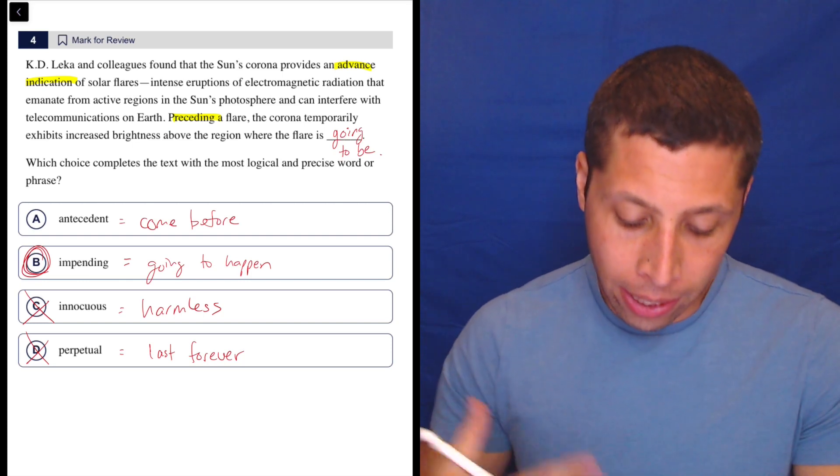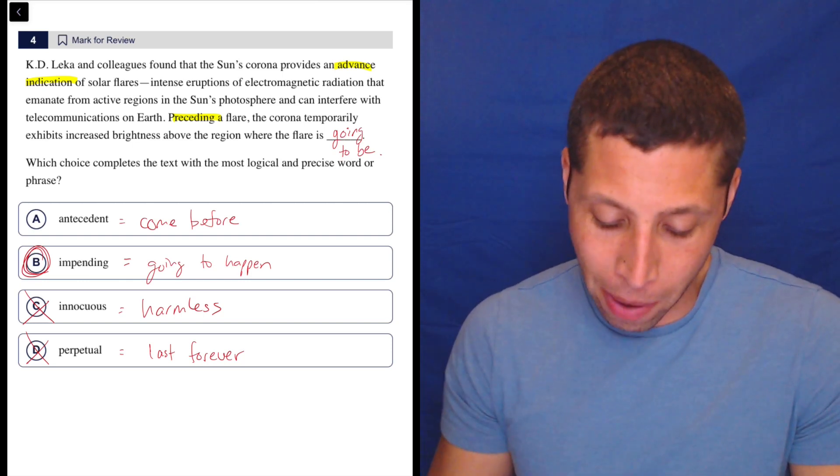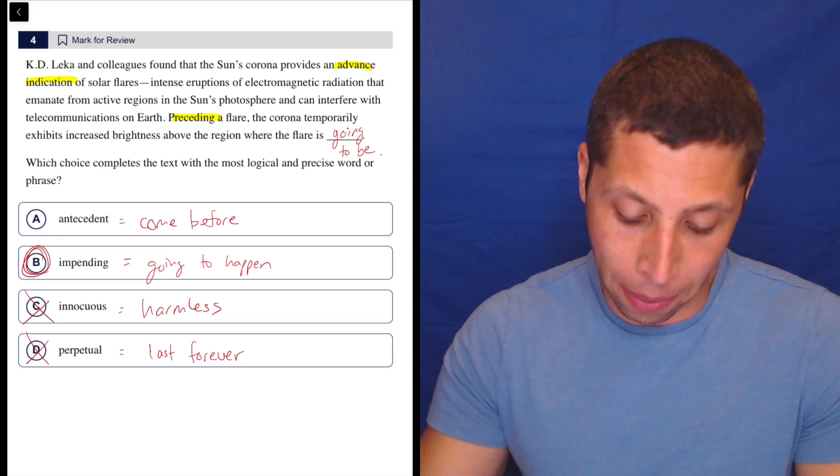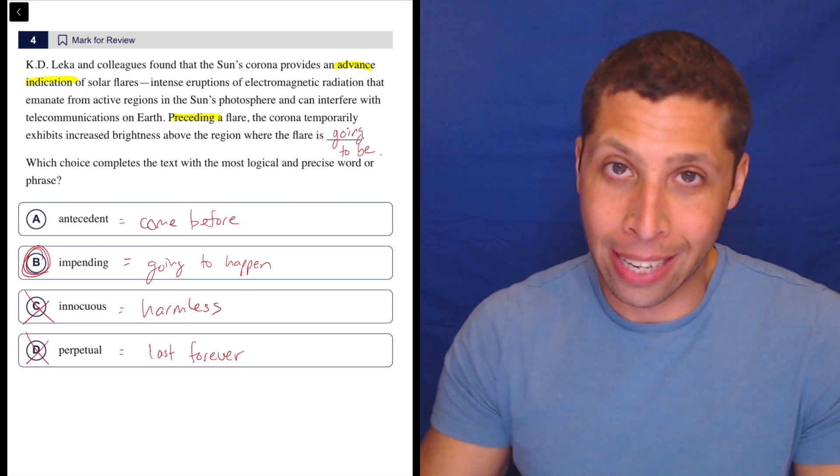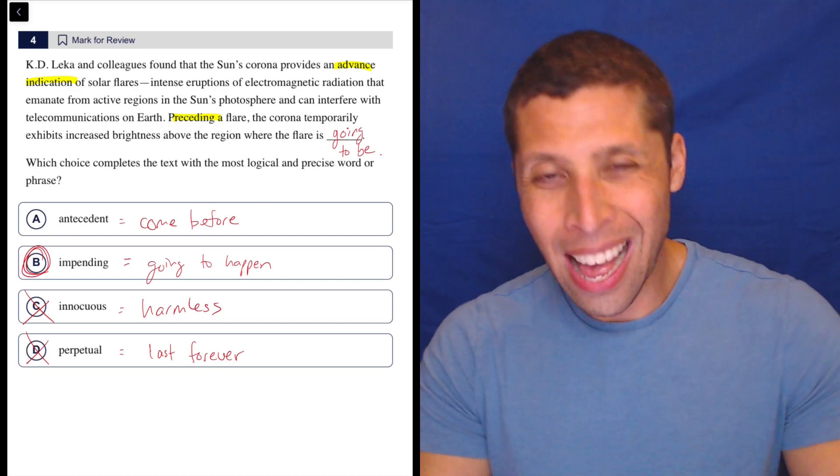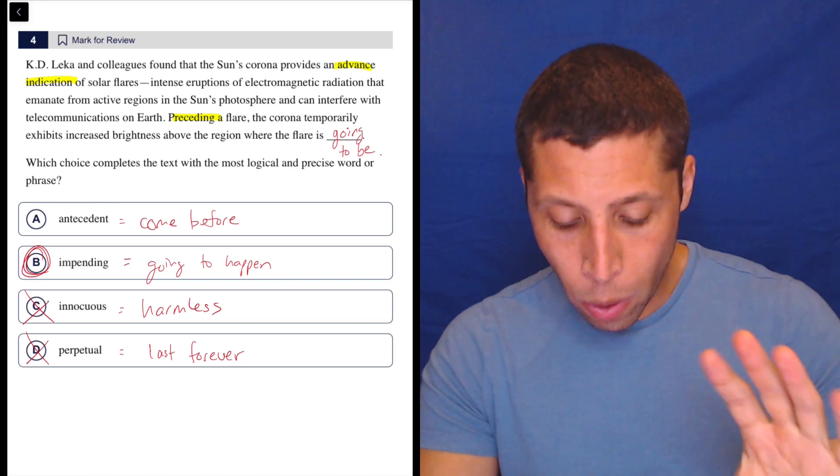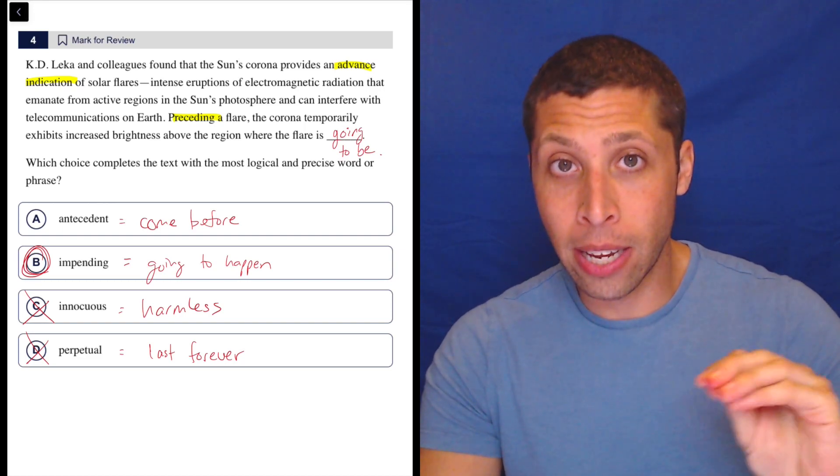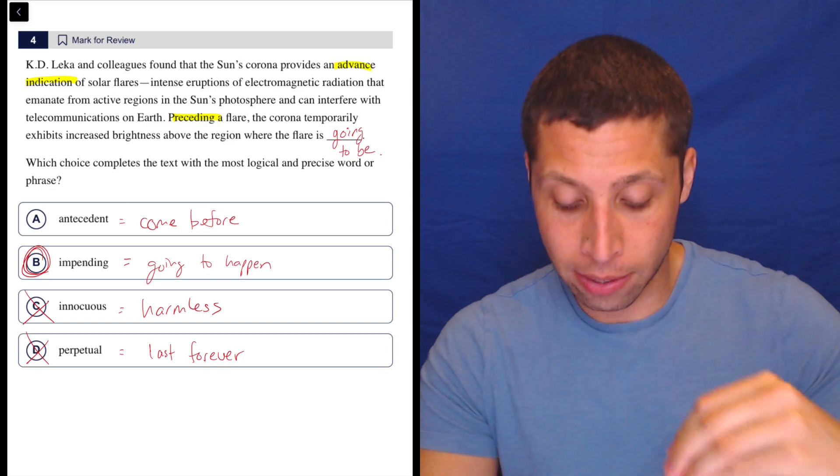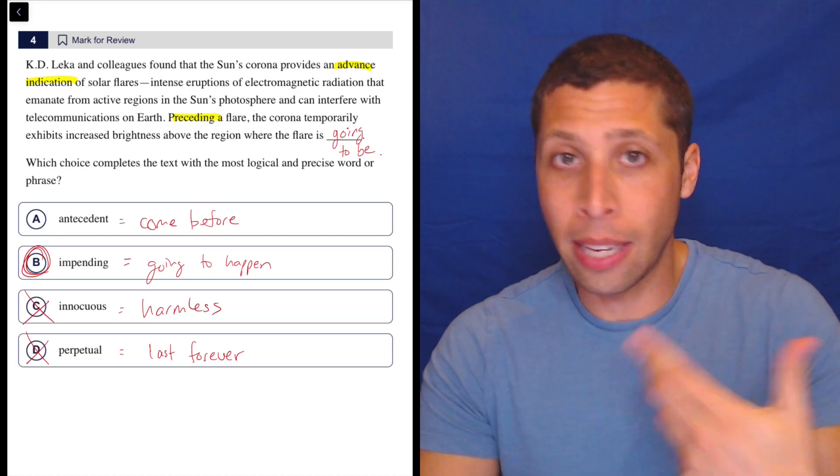So the flare is, it's basically because of the definition I put there is better. The flare is going to happen. So it's impending. It's about to happen. Now the problem with the word antecedent is that's actually flipping the order. I think I'm reading this correctly where that would say that the flare is the thing that comes first because if something is antecedent to something else, it comes first.